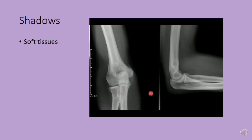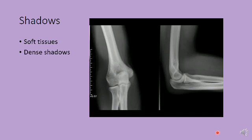The area of interest is usually focused at the center of the field; here the area of interest is the elbow joint. This is the lateral view and this is the AP view — you will learn about views in more detail in a few minutes. To summarize shadows: they are soft tissue shadows, dense shadows, and air shadows.